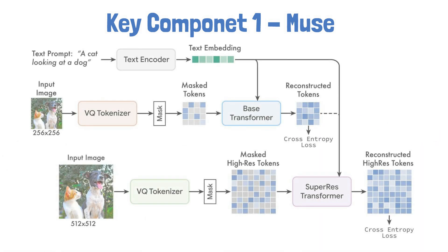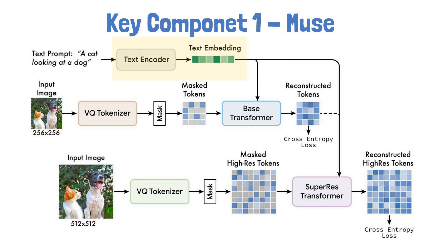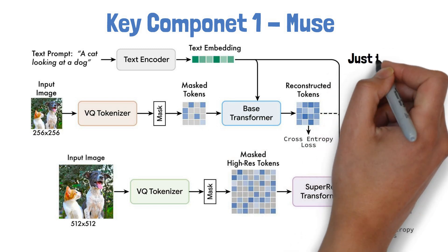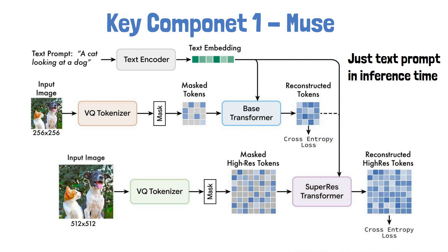To provide some intuition about how Muse works: during training it observes pairs of text and image, such as this prompt of a cat looking at a dog, with the matching image at different scales. It uses a text encoder to get an embedding for the text prompt, and it trains two transformers. One is a base transformer which gets the image in low resolution after it has been randomly masked, and learns to reconstruct the masked tokens using the text embedding. The second is a super resolution transformer which gets the input at higher resolution, also randomly masked, and using the text embedding and the output from the base transformer, it learns to reconstruct the higher resolution input image. Then, in inference, it just gets a text prompt without image input in order to generate an image.